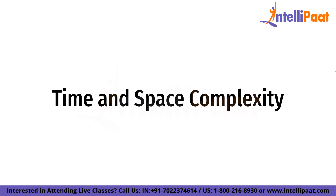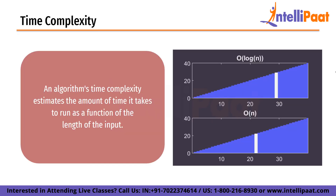In computer science, there is always more than one way to solve a problem using multiple algorithms. It is critical to apply a method to compare the solutions in order to determine which one is optimal. The method must be independent of the system on which the algorithm is running. The number of inputs has a direct correlation and can differentiate between two algorithms without ambiguity. There are two such methods: time complexity and space complexity. An algorithm's time complexity estimates the amount of time it takes to run as a function of the length of the input. The time to execute is determined by the length of the input rather than the actual execution time of the machine.